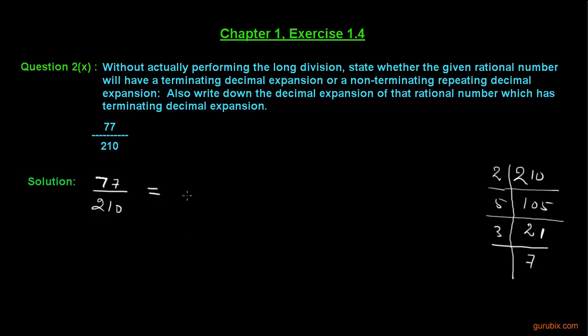We can write 77 over 210 like this because 77 can be written as 7 into 11, and 210 can be written as 2 multiplied by 3 multiplied by 5 multiplied by 7.